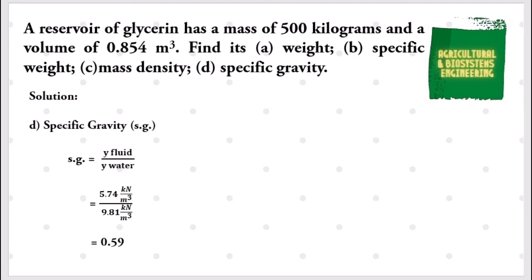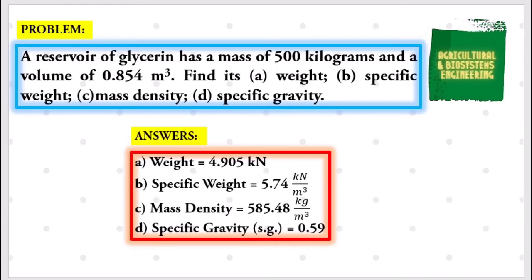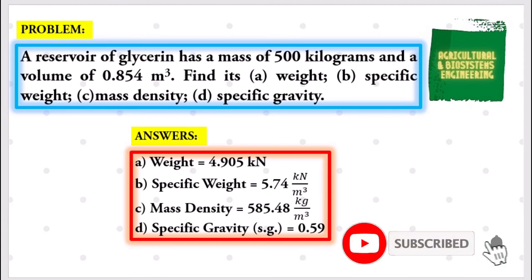Specific gravity is unitless. Here is a summary of the answers: weight is 4.905 kilonewtons, specific weight is 5.74 kilonewtons per cubic meter, mass density is 585.48 kilograms per cubic meter, and specific gravity is 0.59.